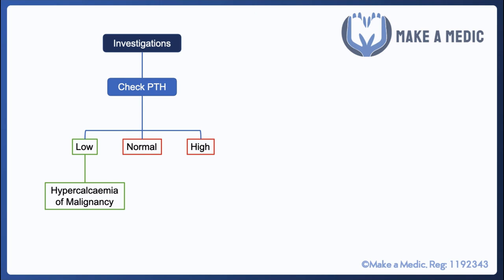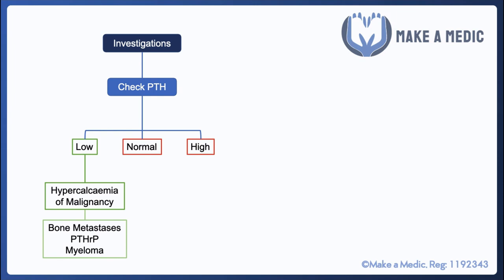Hypercalcemia of malignancy means hypercalcemia driven by malignancy, and this can happen by a few different mechanisms. Bone metastases from any type of tumor can break down bone and liberate calcium, resulting in an increase in serum calcium. Some tumors, notably squamous cell carcinomas of the lung, can produce PTHRP — parathyroid hormone-related peptide — a hormone that plays a physiological role in an embryo, helping it steal calcium from its mother. However, it can be expressed ectopically in certain tumors and mimics PTH, resulting in a high serum calcium. Finally, myeloma is a plasma cell malignancy which can lead to lytic bone deposits, again liberating calcium from the bone.